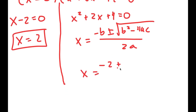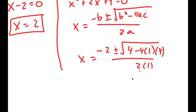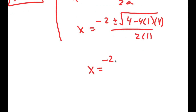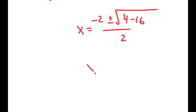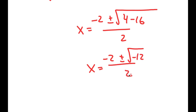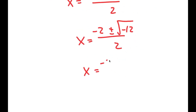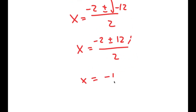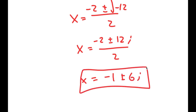Applying the quadratic formula, I get negative 2 plus or minus the square root of 4 minus 4 times 1 times 4, all over 2 times 1. This turns into negative 2 plus or minus the square root of 4 minus 16 over 2, which equals negative 2 plus or minus the square root of negative 12 over 2, giving me negative 2 plus or minus 12i over 2, which equals negative 1 plus or minus 6i. So these are the two additional solutions to this equation.